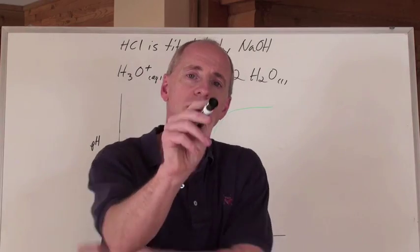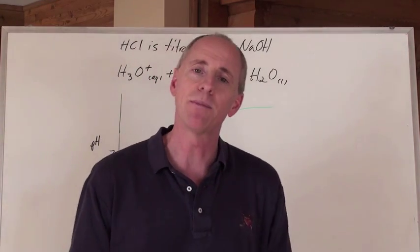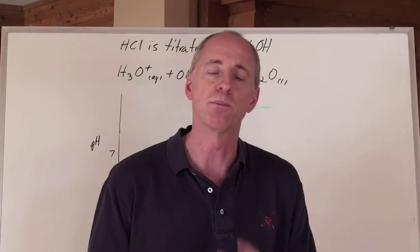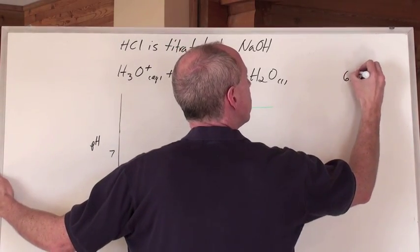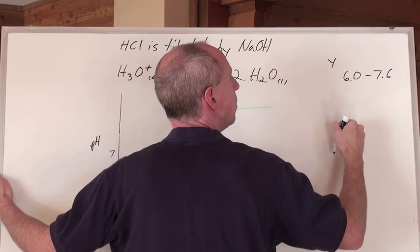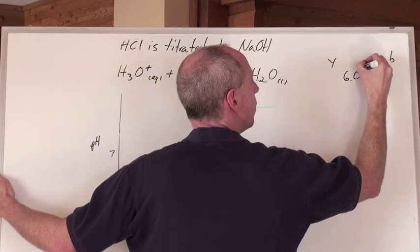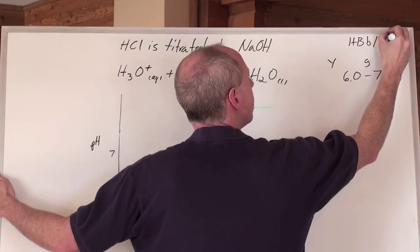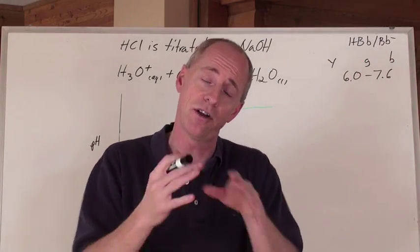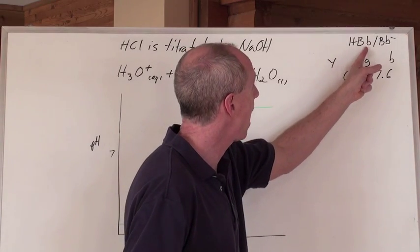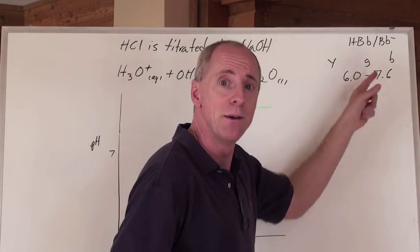If you were doing a titration and someone said to find the equivalence point without graphing it, you could use a chemical indicator. For instance, bromothymol blue is an indicator that changes color in the range of pH 6.0 to 7.6. Below that range, bromothymol blue is yellow; above 7.6, it's blue; and in between, it's green. HBB is the acid form of the indicator, which is yellow. BB⁻ is the blue base form. Mix them together, you get green.